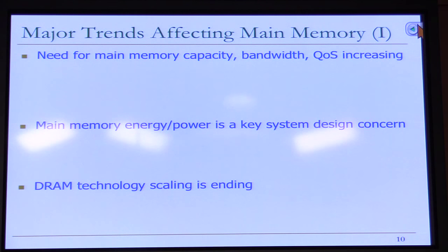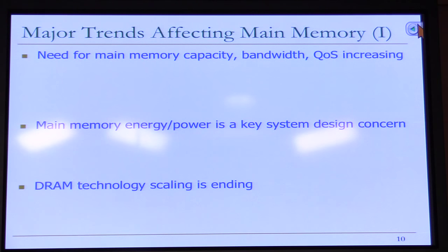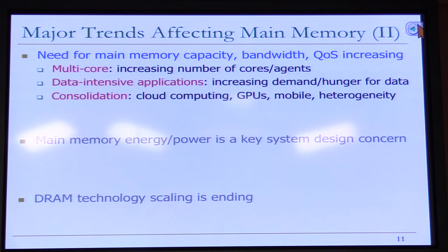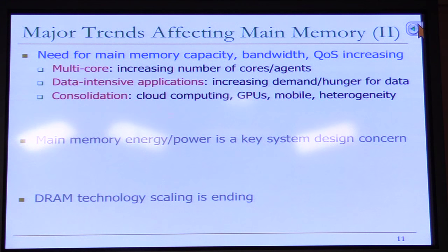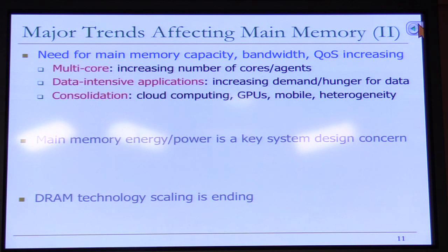Memory is becoming increasingly important because there is an increasing need for main memory capacity, bandwidth, and quality of service. Energy and power is becoming a bigger system design concern, and DRAM technology scaling is becoming really difficult. We need more memory capacity, bandwidth, and quality of service because we're putting more cores and accelerators on chip — they're demanding more. Applications are becoming increasingly memory-intensive. Data from an HP Labs and University of Michigan paper at ISCA 2009 shows that core count is doubling approximately every two years, whereas DRAM capacity is doubling approximately every three years.